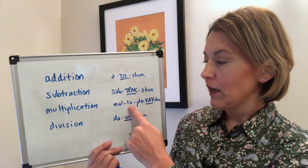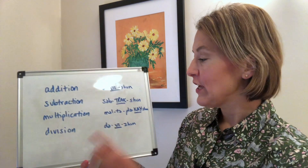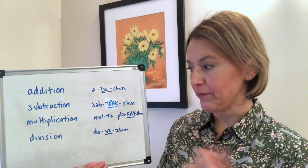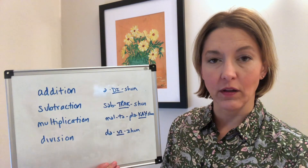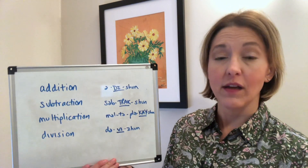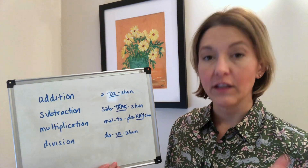Next, 'multiplication' — we have lots of schwas: mul-ti-pli-ca-tion. I just realized I forgot to cross my T, so: multiplication. And last, 'division' — schwa sound first for that first syllable, 'duh,' and then stressed: 'vi-zhun.' Division.